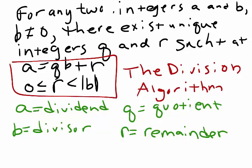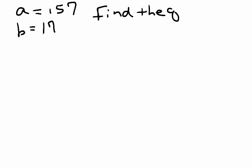Let's take a look at the relationship between the elements and the division algorithm by looking at a couple of short examples. Suppose A is equal to 157 and B is equal to 17, and you need to find the quotient and the remainder.